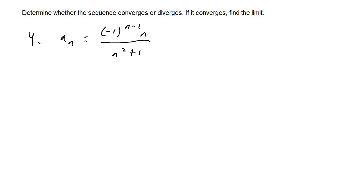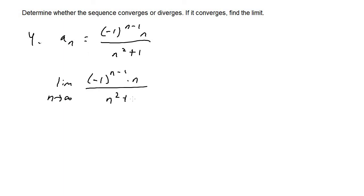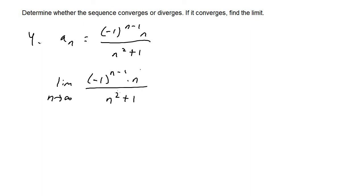For number four, a_sub_n equals negative one to the (n minus 1) times n over (n² plus 1). Setting the limit as n approaches infinity, don't let the alternator confuse you. The key comparison is the highest degree of the numerator, n to the first, versus the highest degree of the denominator, n squared. Since the fraction is bottom heavy, the limit is zero — the sequence converges to zero.